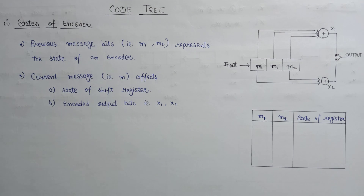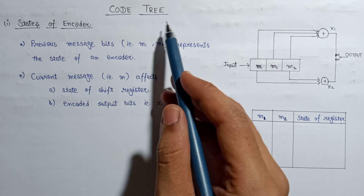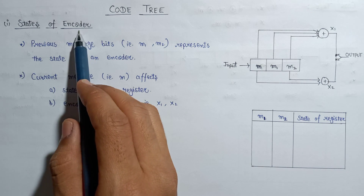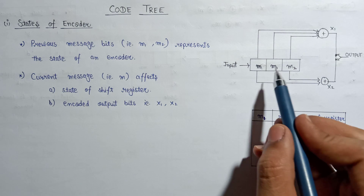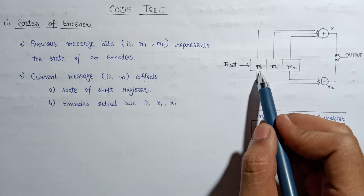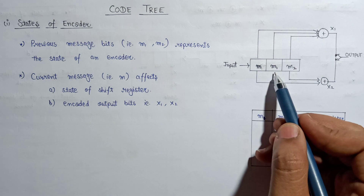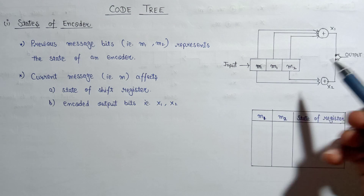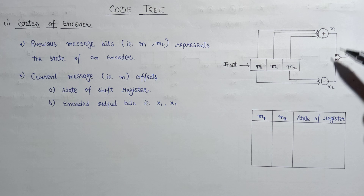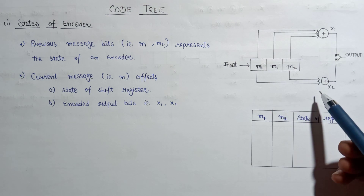Hi everyone. In this lecture we are going to discuss about how to plot a code tree. Before plotting the code tree, let us have a look at the states of the encoder. This is the encoder that we designed in our previous video. The input is applied here, and we will have the three message bits: m, m1, and m2. m is the current message bit, whereas m1 and m2 represent the previous two successive message bits. We will have two encoded outputs, x1 and x2, and on the basis of x1 and x2 we will get our final output.